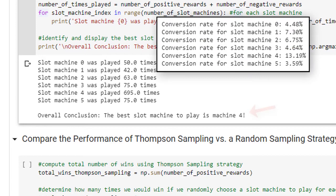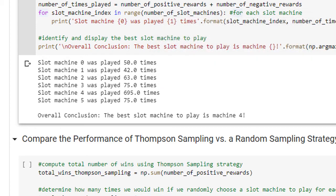As you can see, our reinforcement learning based AI system was able to correctly identify slot machine 4 as the machine with the highest probability of winning, and it played that machine on 695 of the 1,000 turns in an effort to try to maximize its cumulative rewards.